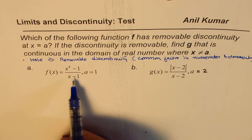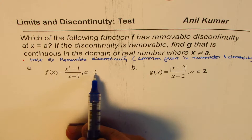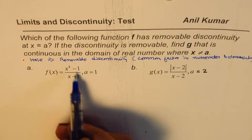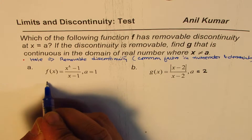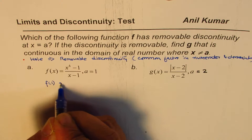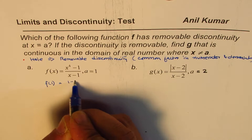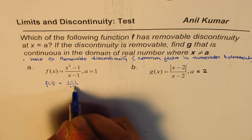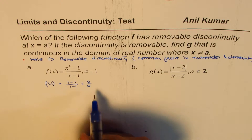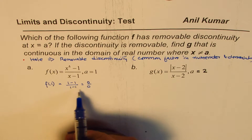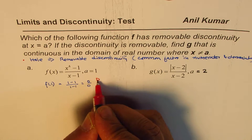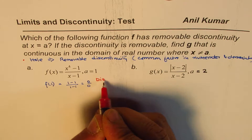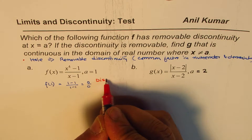So what we need to do here is first substitute 1 into the equation. If I write 1, what is f of 1? I get 1 minus 1 over 1 minus 1, which is 0 over 0. So that means there is a discontinuity at this point — it is a discontinuous function. There is a discontinuity.